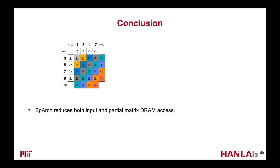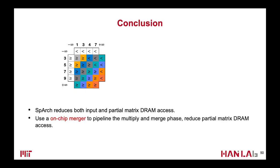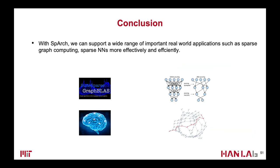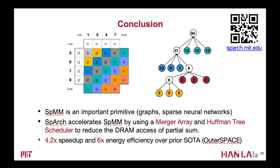In conclusion, Spark focuses on reducing both input matrix and partial matrix DRAM accesses. We use an on-chip merger to pipeline two phases and a Huffman tree scheduler to find the optimal order to merge partial matrices. The real world is a sparse world, and most applications deal with sparse data. With Spark, we hope to support a wide range of important real-world applications, such as sparse graph computing and sparse neural networks, more efficiently and effectively. Thank you very much for your attention, and you can find more information on our project website.